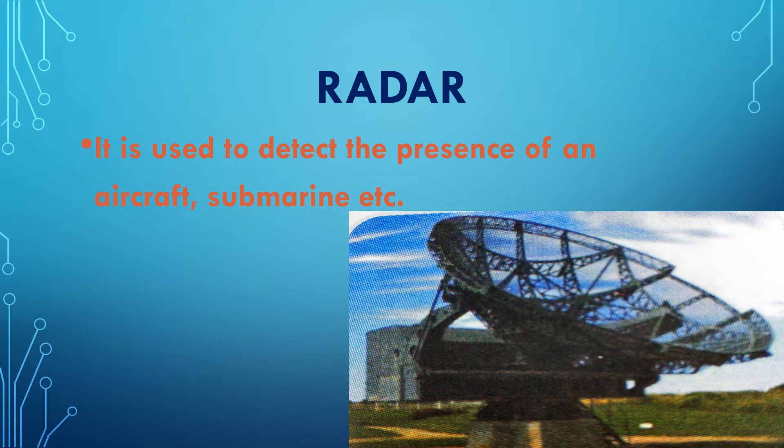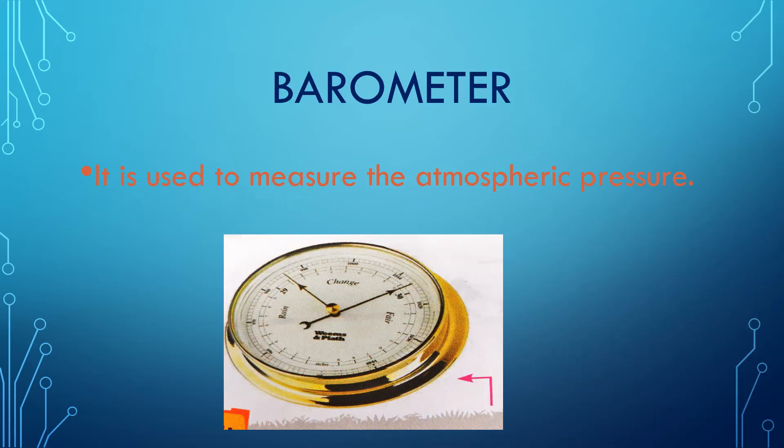Next is radar. Radar is used to detect the presence of an aircraft or submarine. It is used to see if there is anything under the water. A radar is used for detecting any submerged or distant object.